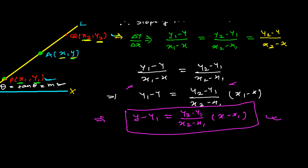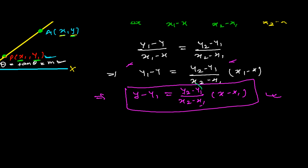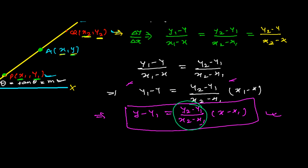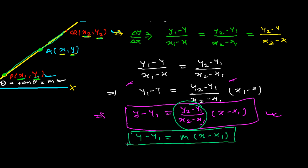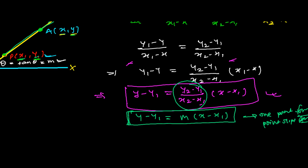So the general equation for the two-point form is: y minus y₁ equals (y₂ - y₁)/(x₂ - x₁) times (x - x₁). If you look closely, (y₂ - y₁)/(x₂ - x₁) is actually the slope M of line PQ. So this becomes y - y₁ = M(x - x₁), which is just the point-slope form. All these equations are almost the same.